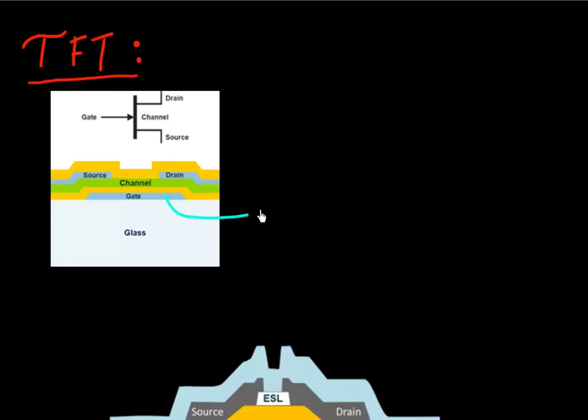So the first layer you deposit is this gate layer. And then you have this gate insulator, so this would be your gate oxide. And then you deposit this channel layer which has been amorphous silicon primarily. And then you deposit these source and drain regions.